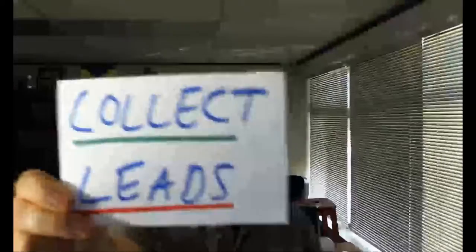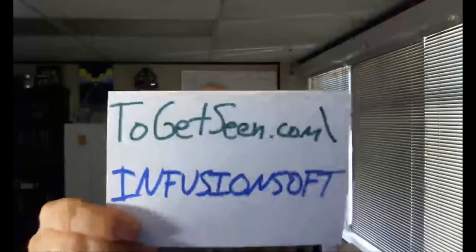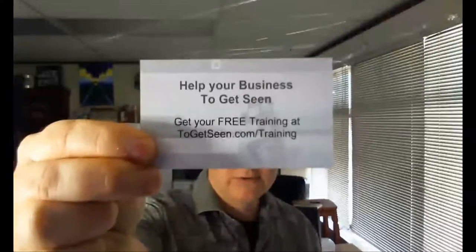Stage three: collect leads. You want to be able to collect the leads, capture information. One place you can go to is togetseen.com/infusionsoft. That is one lead page I have. Another one is togetseen.com/training. These are my lead pages that I use. I'd love for you to check it out. But you need to build your own. Make sure it's the right thing for the right person at the right time so they'll give you their information.